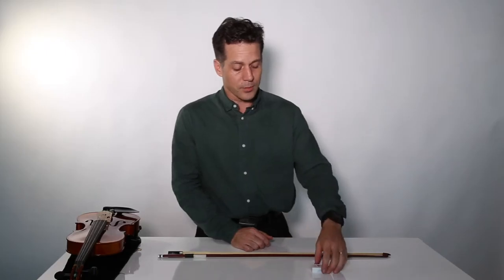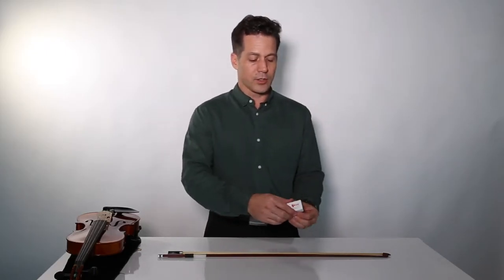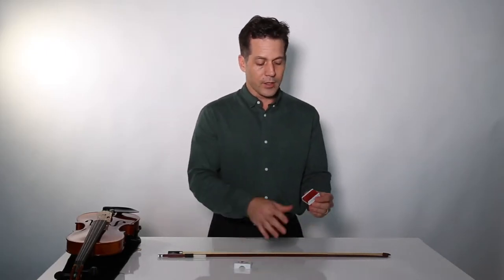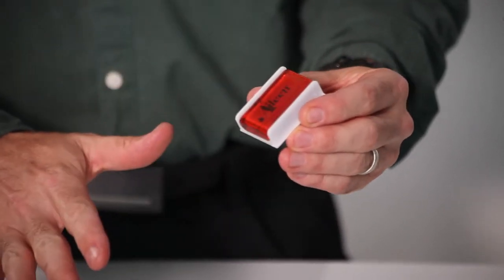So I'm going to show you how to rosin the bow. To rosin your bow, take the Aileen rosin that you got in your kit and when it's brand new, it's going to be glossy like this.